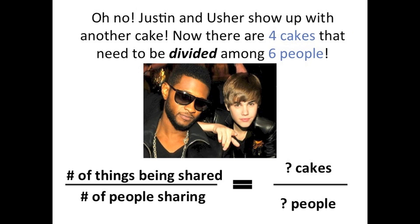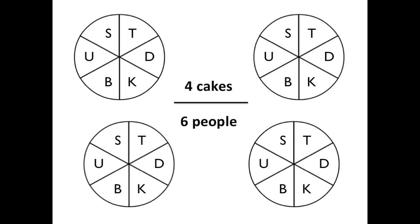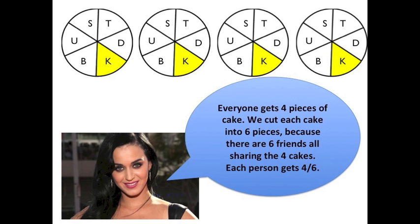Oh no! Justin and Usher show up with another cake. Now there are four cakes that need to be divided among six people. So I'm going to divide the number of cakes by the number of people sharing them. Here's my picture that shows the four cakes divided into equal parts so that all six people can equally share the cakes. We cut each cake into six pieces because there are six friends. The fraction I'm using to represent this is four over six, which is the same as four divided by six.